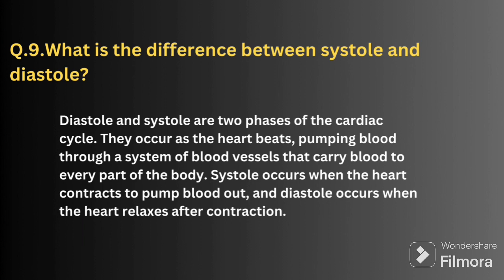The next question is: what is the difference between systole and diastole? Diastole and systole are two phases of the cardiac cycle. They occur as the heart beats and pumps blood through a system of blood vessels that carry blood to every part of the body. Systole occurs when the heart contracts to pump blood out, and diastole occurs when the heart relaxes after contraction. Simply put, systole means contraction and diastole means relaxation.